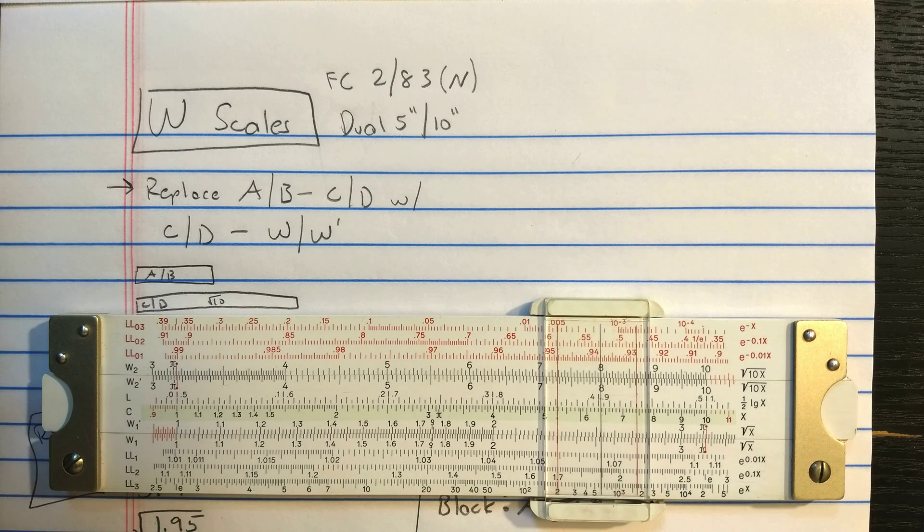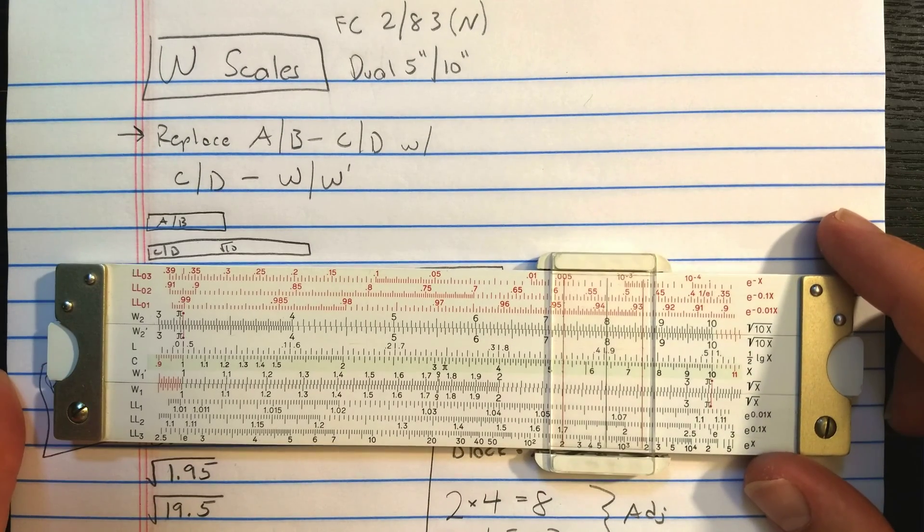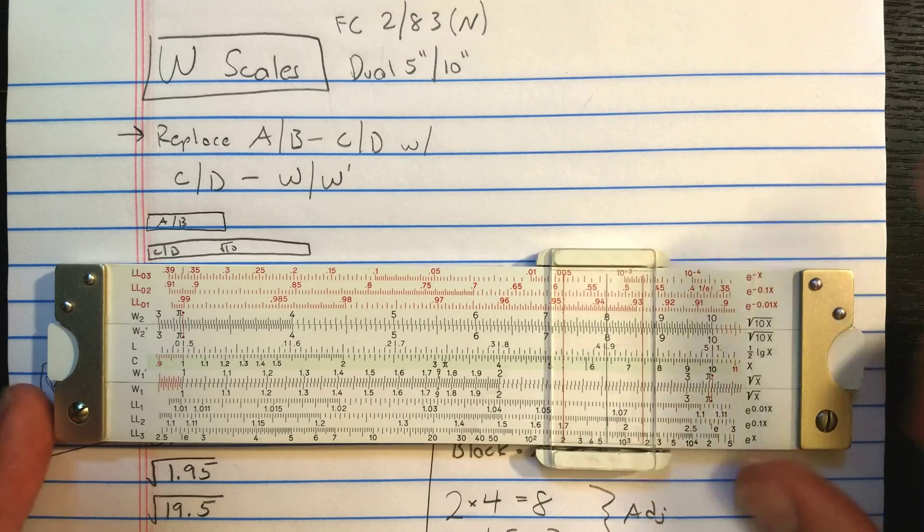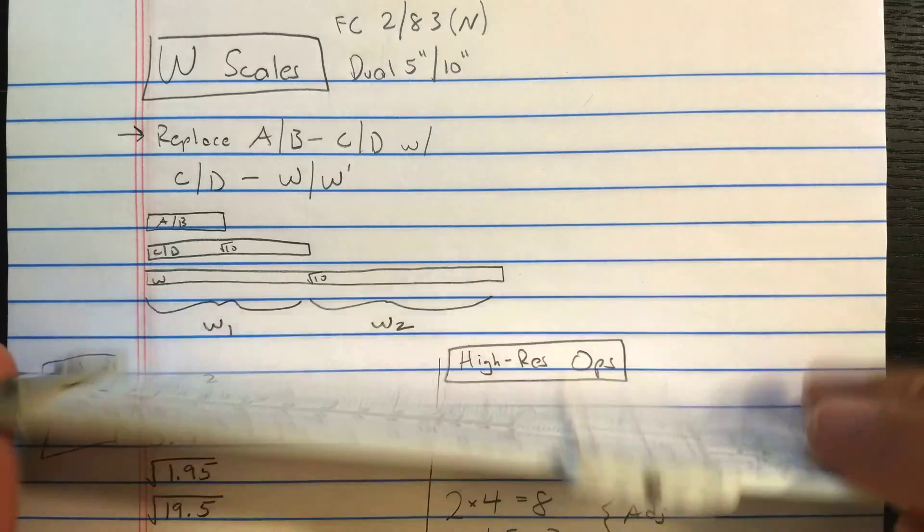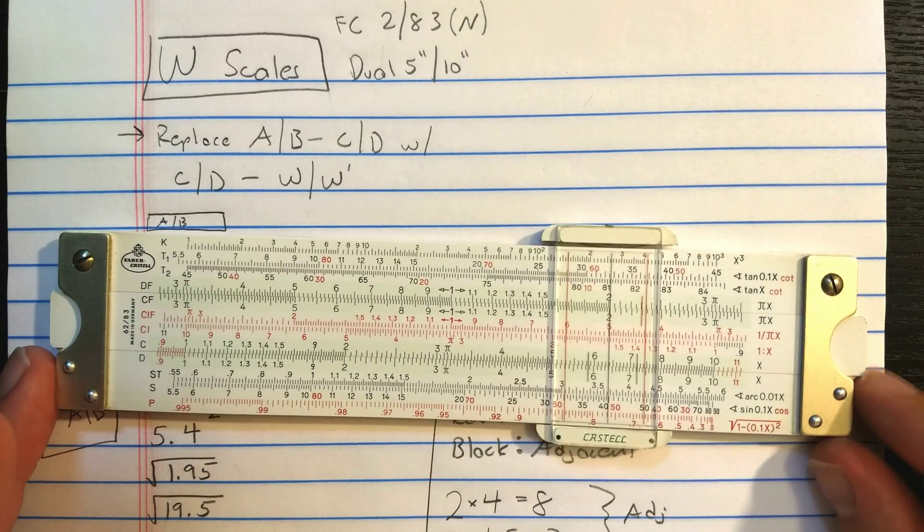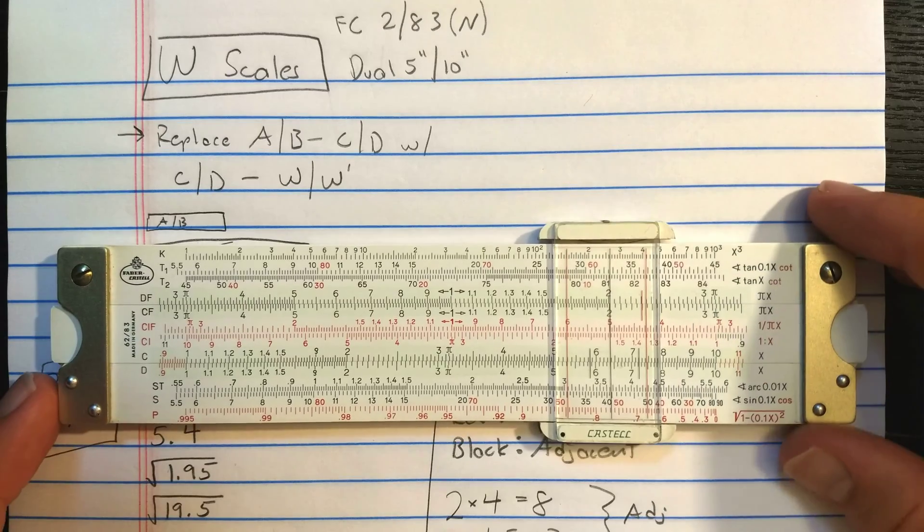They're also found on an older slide rule called the dual 5-inch, 10-inch slide rule. I believe that slide rule is made by Charvaz. But they're most popular for being found on the 283 and 283N slide rules. This slide rule is a 6283N, which is the 5-inch version of the 283N slide rule.